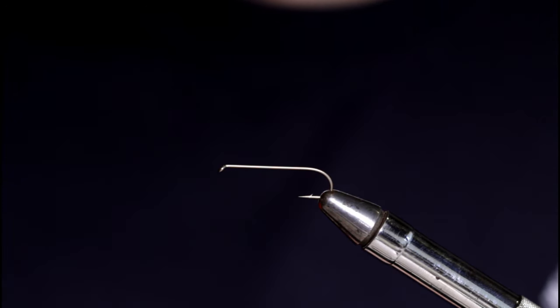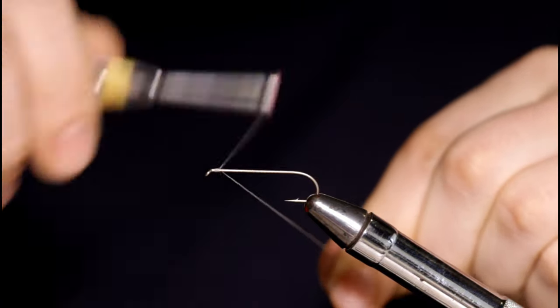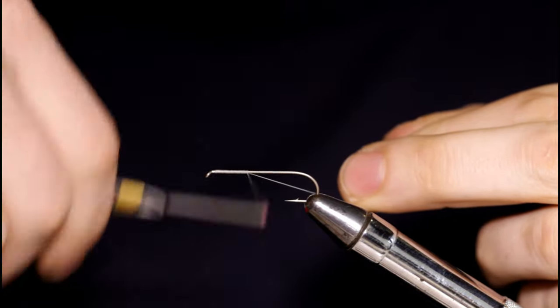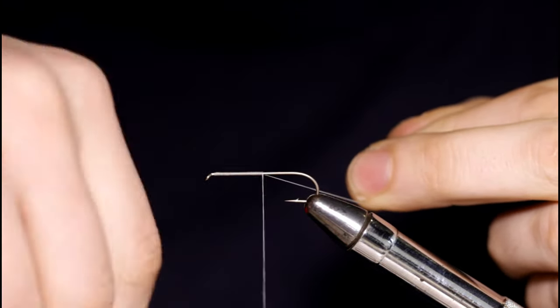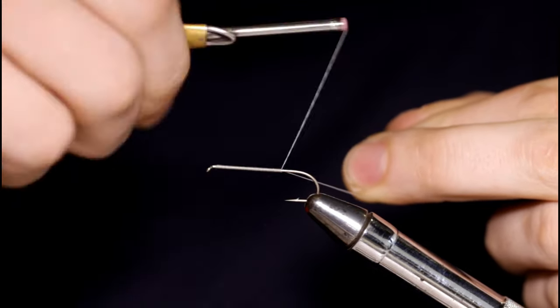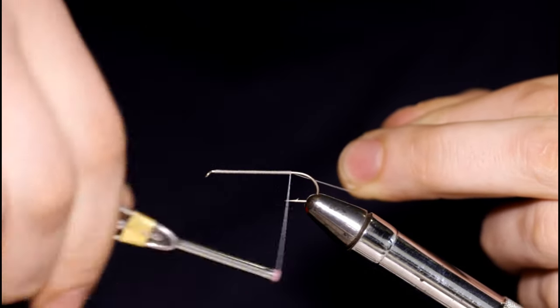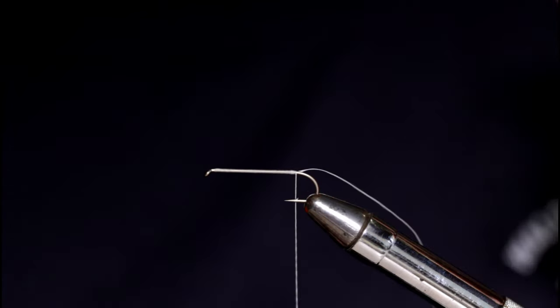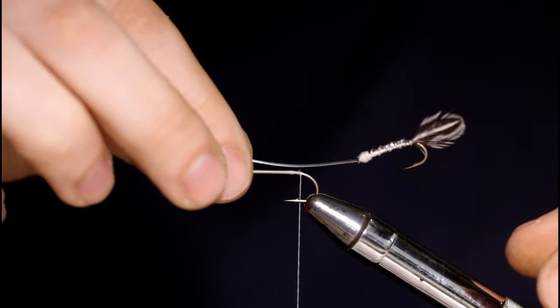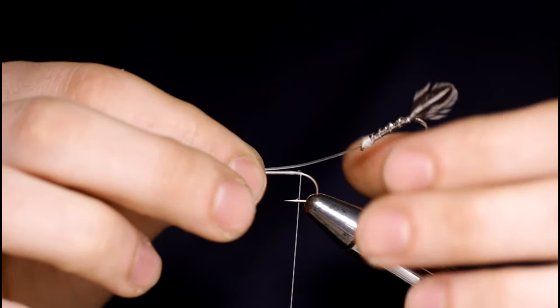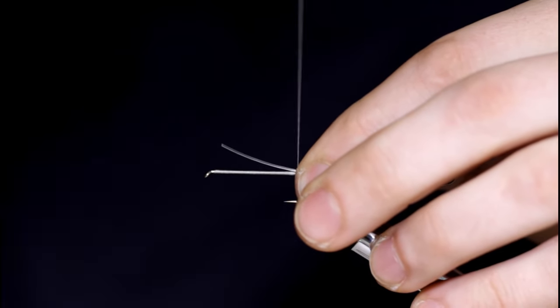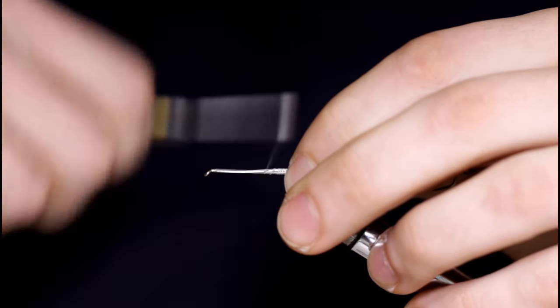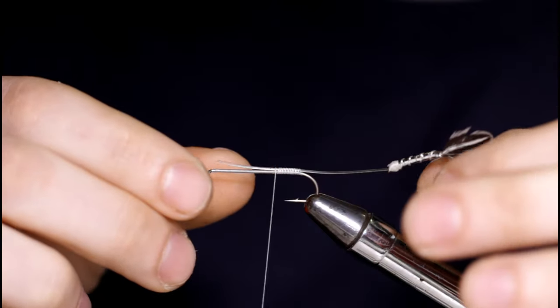So I've got my size 6 nymph streamer hook in the vise. I'll be winding on the same thread as the rear hook. Snip that tag off then I'll come in with the rear hook. Set this on top here. And always stop halfway through because this is the only opportunity that you'll have to make sure both hooks are riding straight with one another.